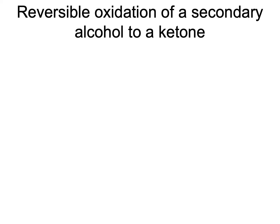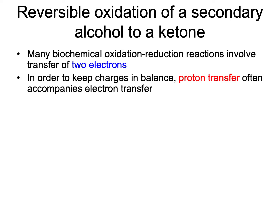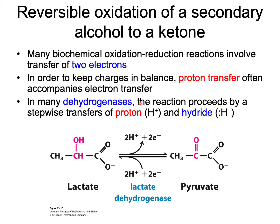Let us consider the reversible oxidation of a secondary alcohol to a ketone. Many biochemical oxidation-reduction reactions involve transfer of two electrons. In order to keep charges in balance, proton transfer often accompanies electron transfer. In many dehydrogenases, which are enzymes that reduce molecules, the reaction proceeds by a stepwise transfer of protons and hydride.